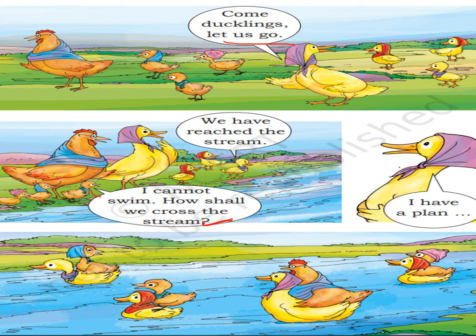Who is she? Duck. What is she saying? 'I have a plan.' So what is the plan? Here you can see all the chicks are seated on the ducklings and they are crossing the river.